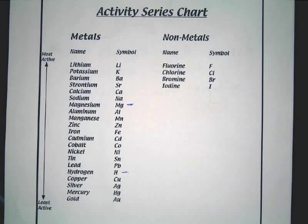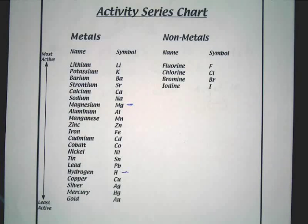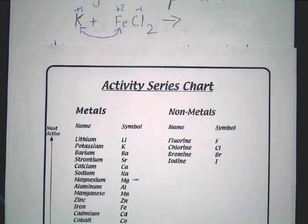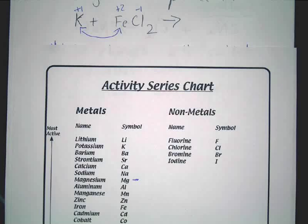What this tells us is that certain things react more than other things. Let's look at our reaction — potassium and iron. Potassium is higher up on the chart, iron is way down. So potassium is more reactive. It's like iron is bonded to chlorine walking down the street, and potassium shows up and says, go away. Potassium is more reactive and will replace iron. If iron were higher on the chart than potassium, nothing would happen.